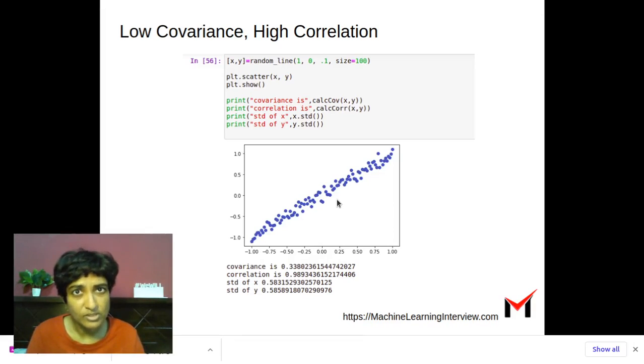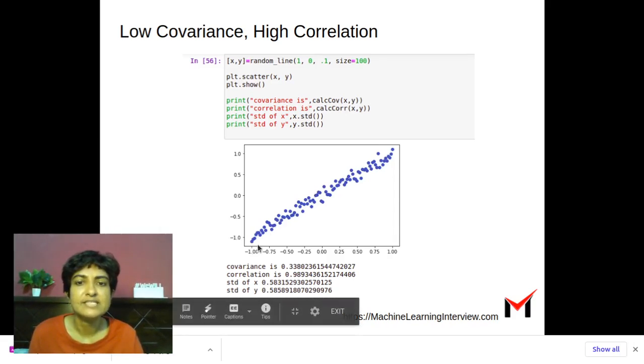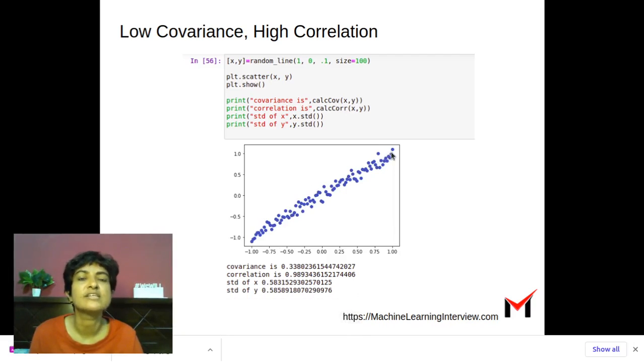Now, here is another piece of code that's plotting a set of points, as you can see here, and you would expect these points to have a strong positive dependence, linear dependence. So what that means is, as the value of x is increasing, we see that the value of y is also increasing for these points.